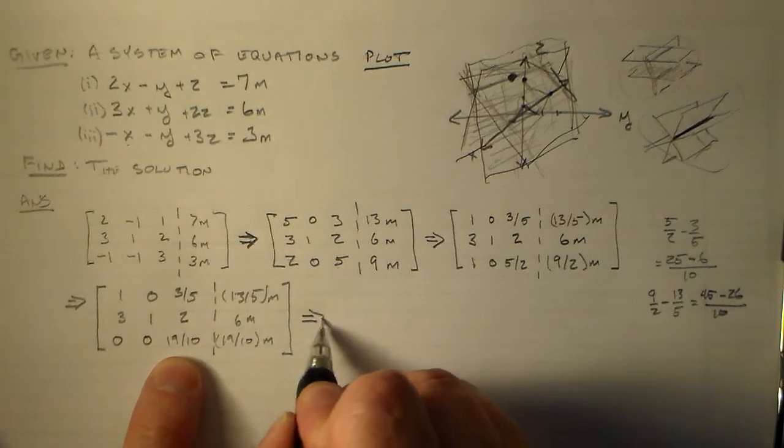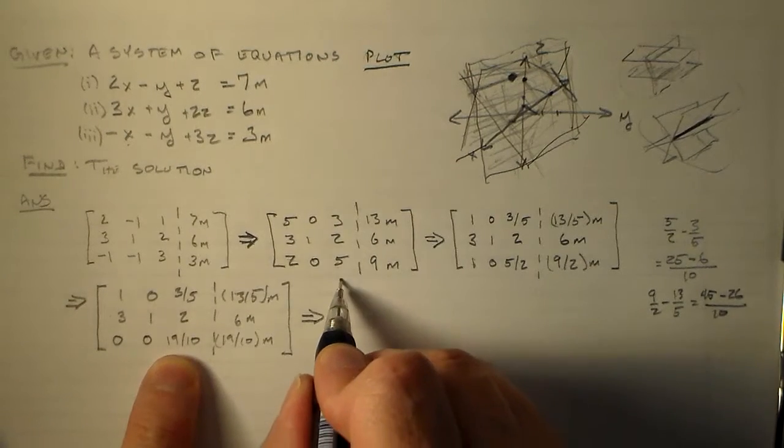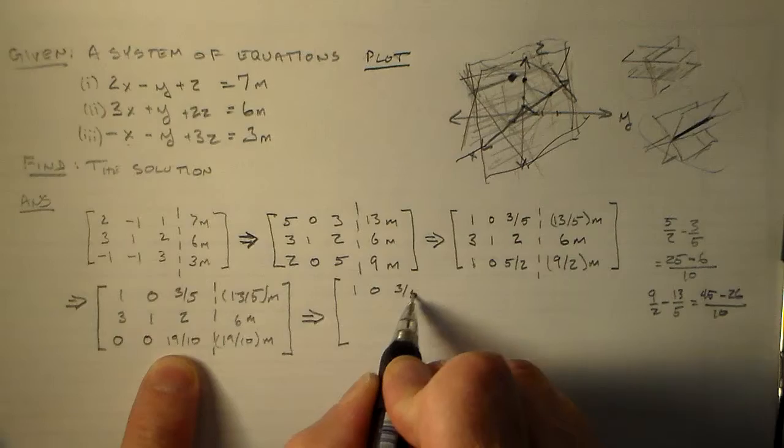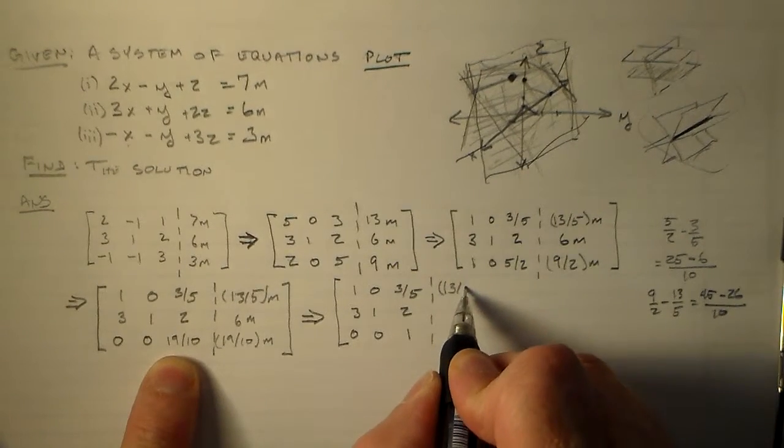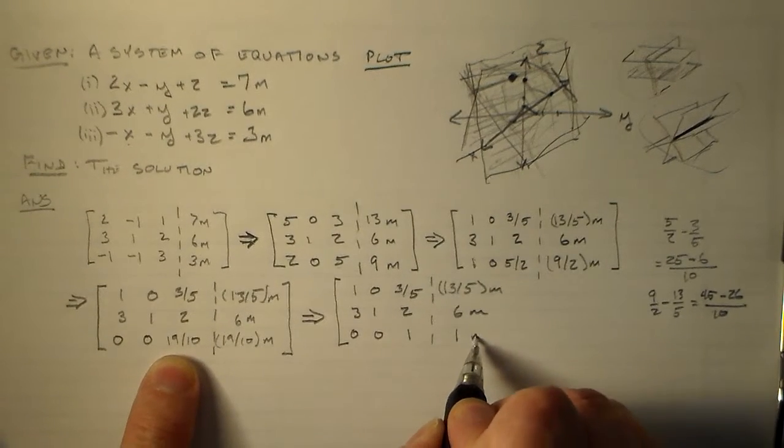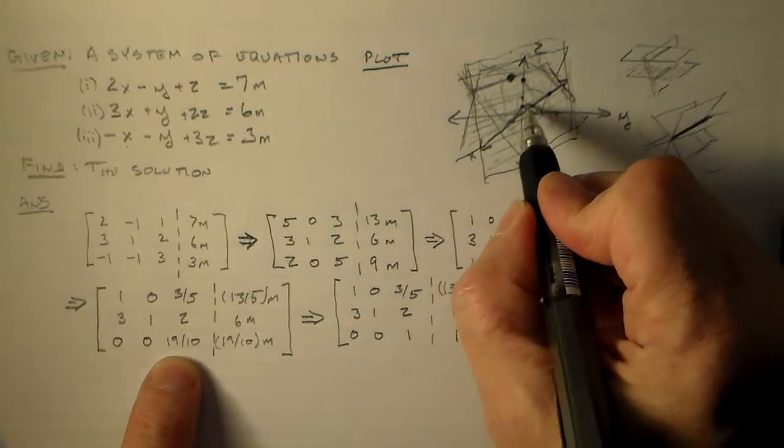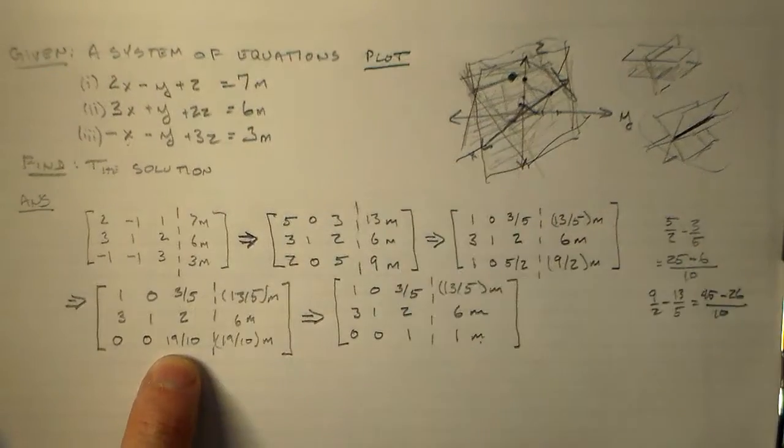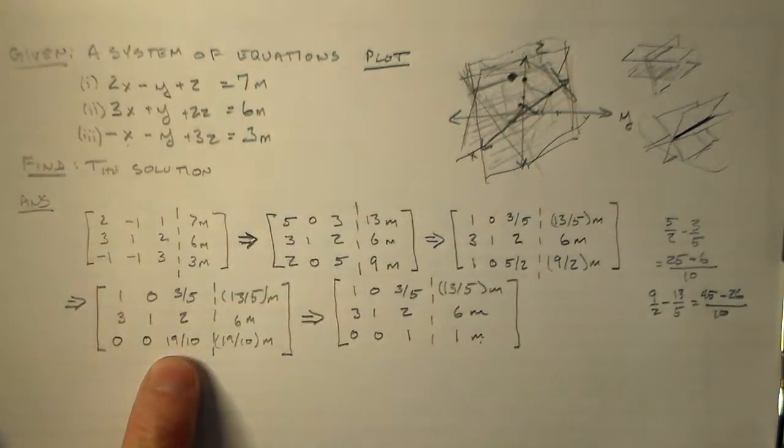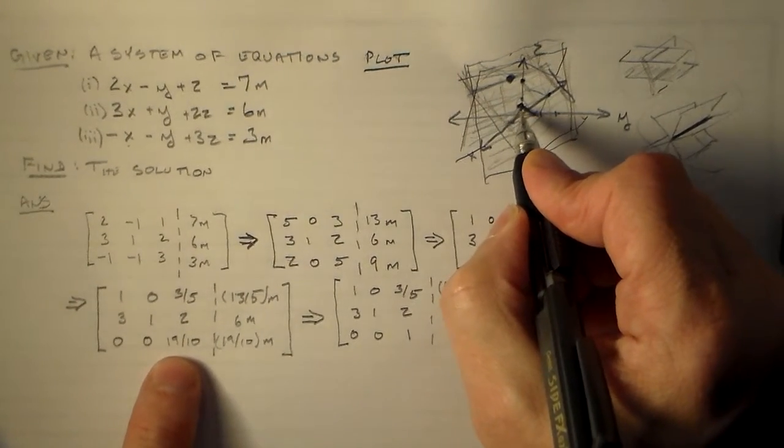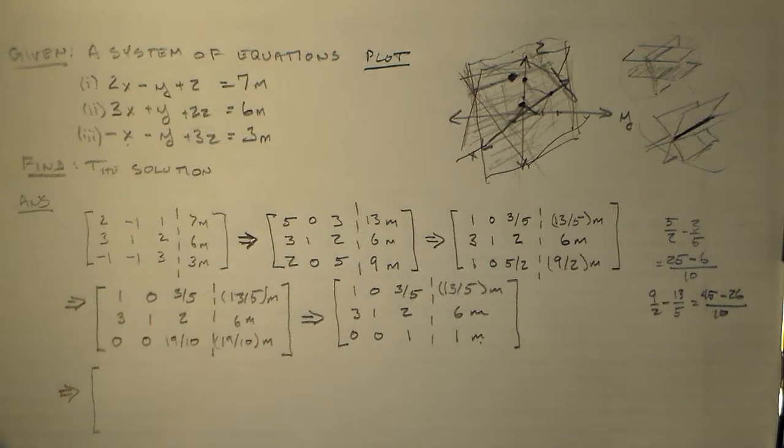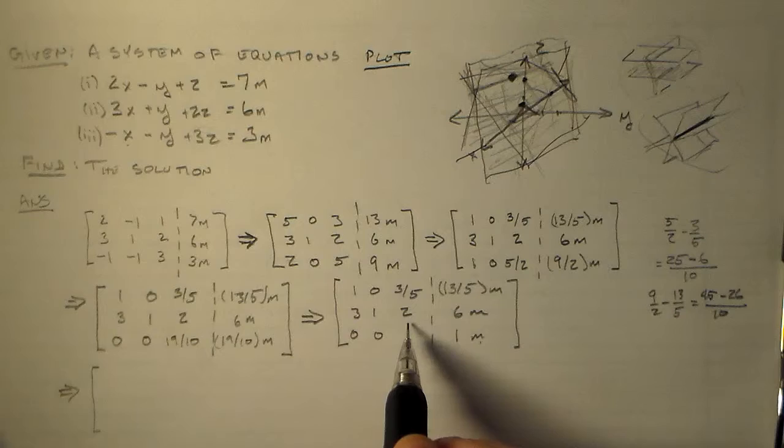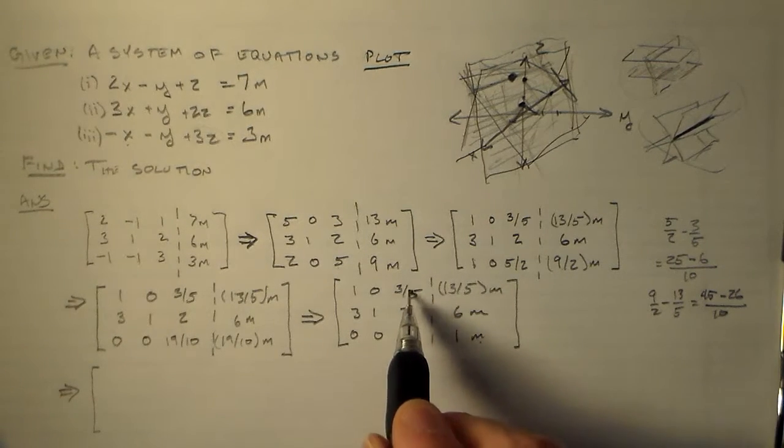So I'll just add row two to both row one to row one and add row two to row three. And replace row one and row three, respectively. So, if I do that, I say, okay, three plus two is five. One minus one is zero. Two plus one is three. Three, one, two. Three minus one is two. One minus one is zero. Two plus three is five. Dot, dot, dot, dot. And I add six plus seven, which is thirteen meters. I still have six meters. Six plus three is nine meters. Okay?